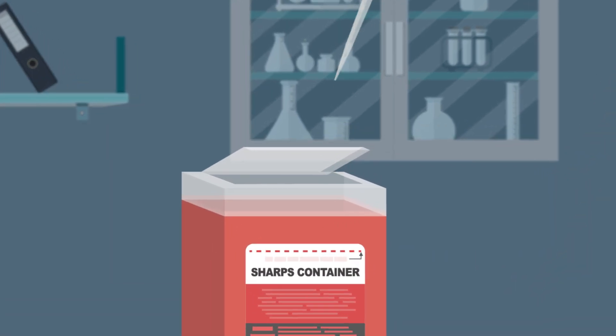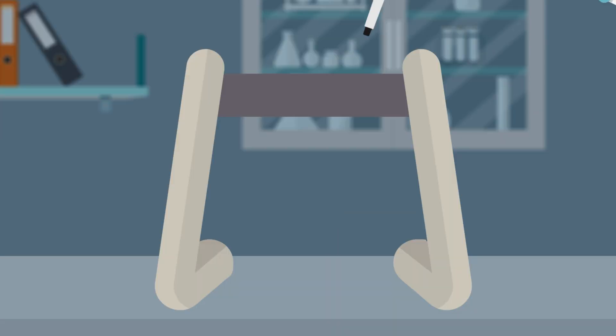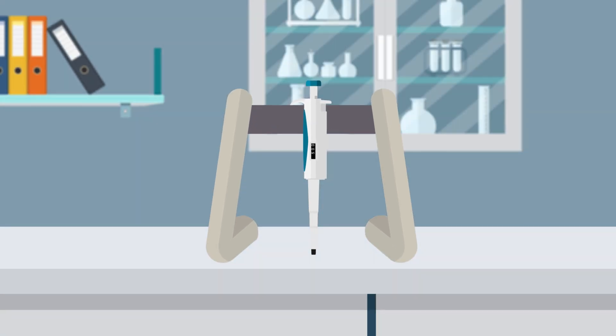Carefully move the micropipet over to the waste container. Using your thumb, press the tip eject lever and eject the pipet tip from the micropipet. Place the micropipet upright on the pipet stand for decontamination. Avoid resting or storing the micropipet on its side to protect the pipet's internal mechanisms.